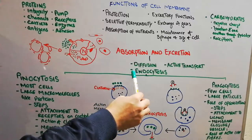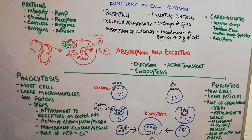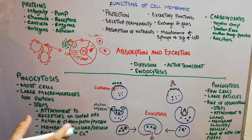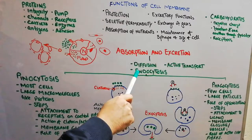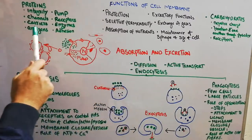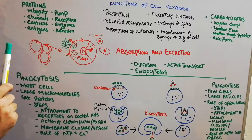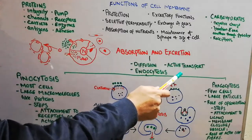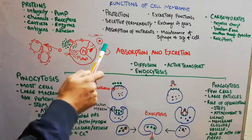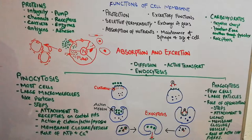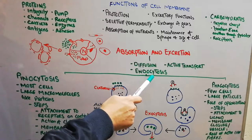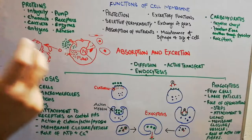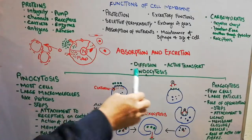Let's recap: cells basically absorb substances through diffusion, active transport, or endocytosis. In diffusion, different ions or substances go inside or outside the cell without energy. In active transport, energy is required. In endocytosis, large molecules, cells, bacteria, or any sort of antigen are taken inside using energy.